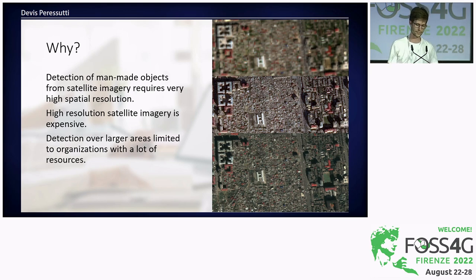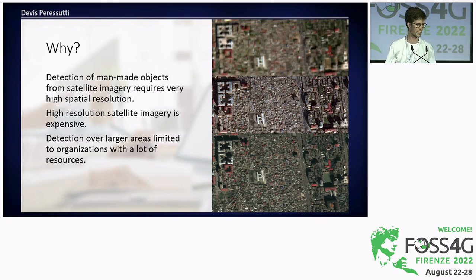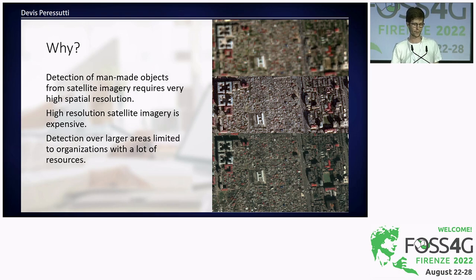Years later, I started working at an Earth Observation company and got introduced to Sentinel-2. You try to find your house, but you can't really see it because it's less than 10 meters by 10 meters and doesn't even cover one Sentinel-2 pixel. So detection of man-made objects from medium-resolution imagery is not possible — it requires high-resolution imagery, which is very expensive, limiting it to organizations with a lot of resources.